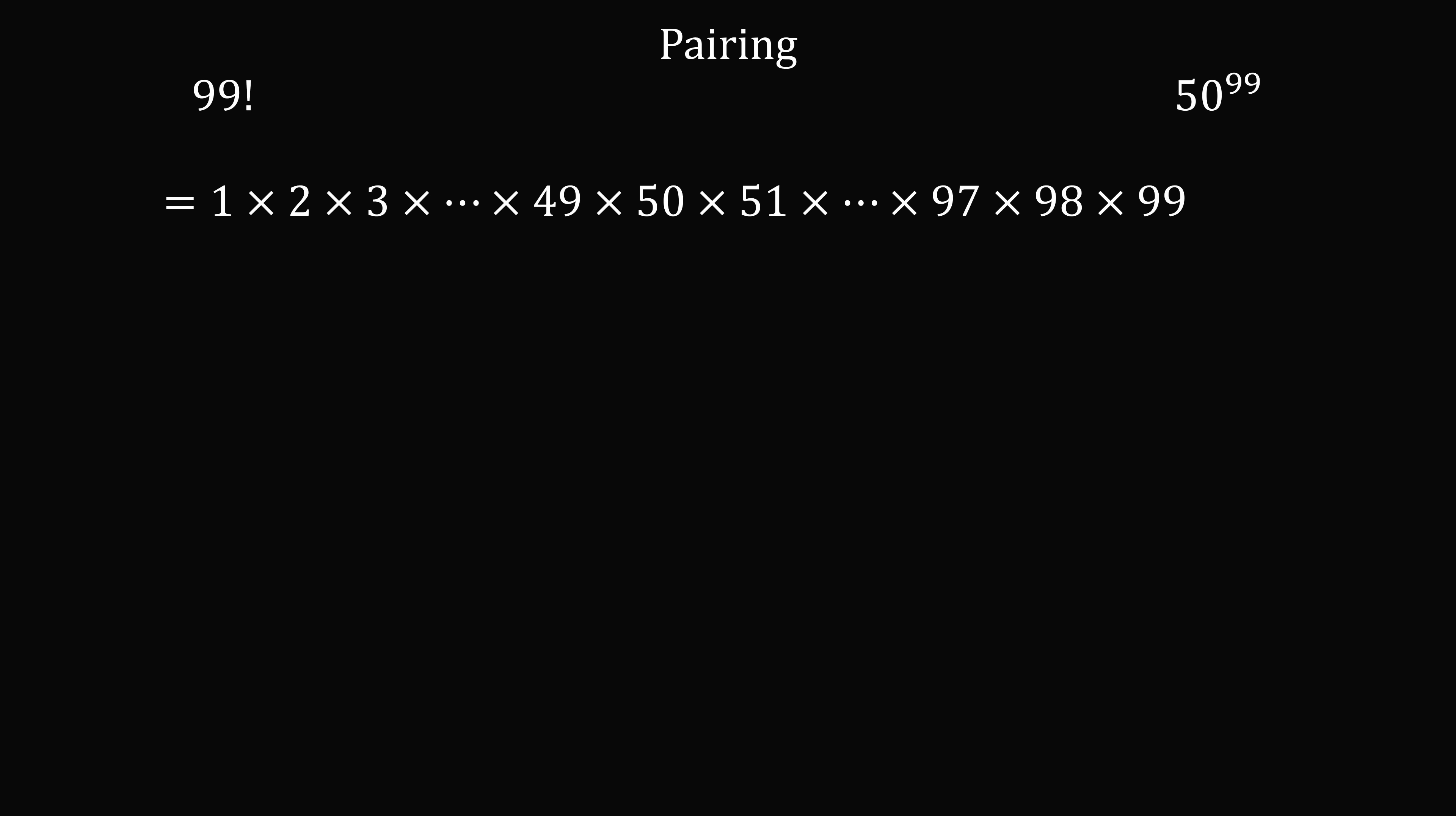So we have 99 factorial, which is equal to the product of these pairs. Now we can rewrite each pair as a difference of squares.